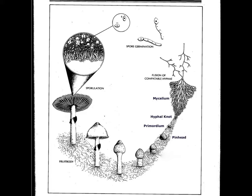When conditions are right, a small hyphae knot will form, which develops into a primordium, and then a pinhead, a button, and the various stages of the mushroom, until it has gills that are fully developed and producing billions of spores. At that point, the life cycle is complete.